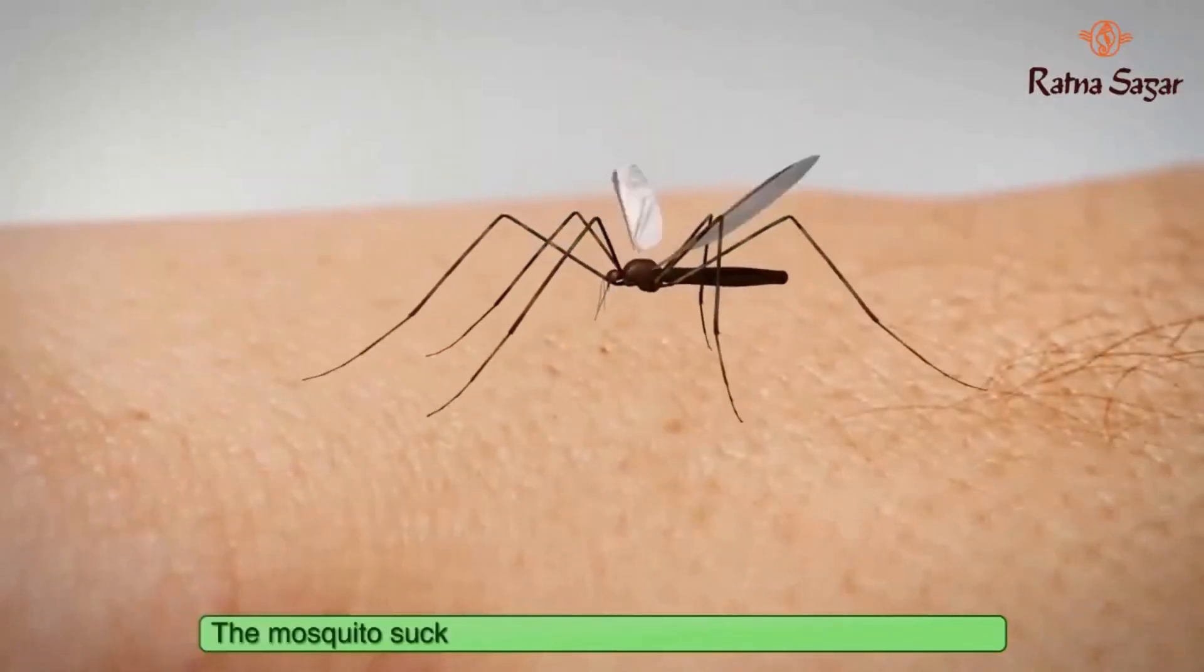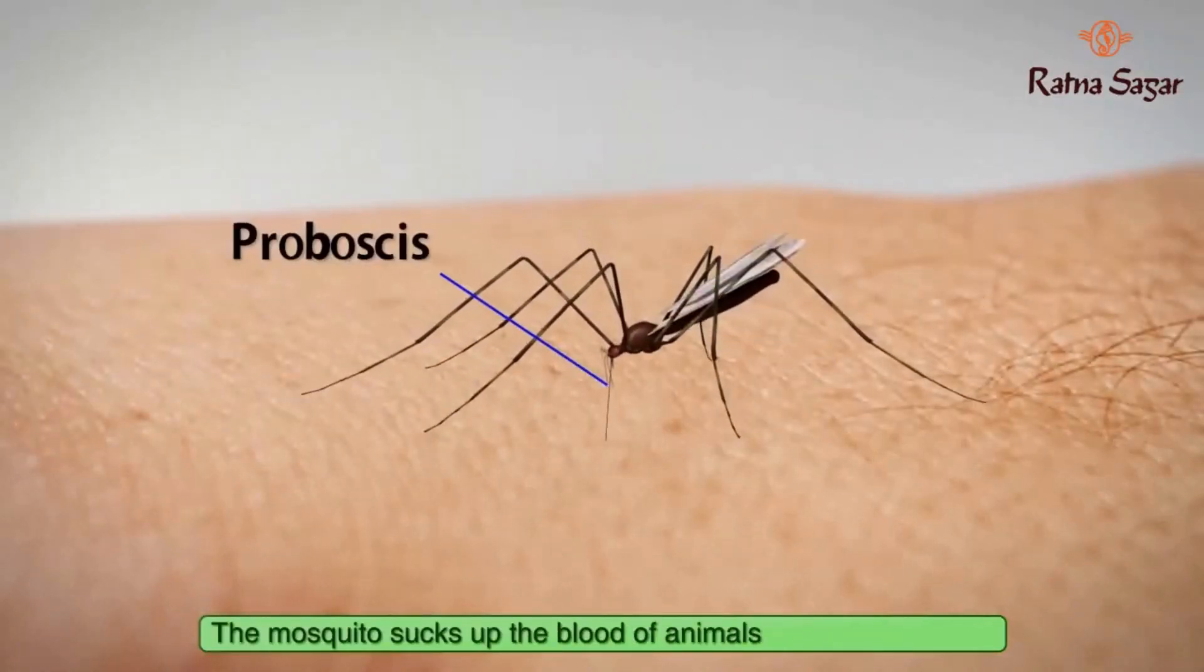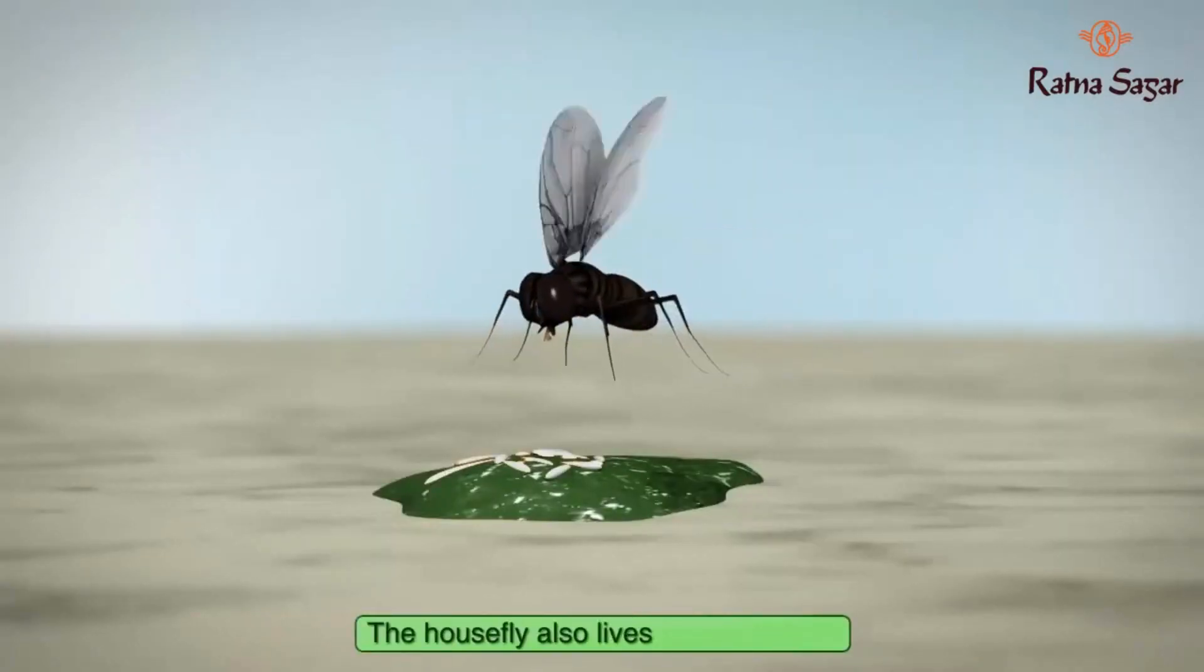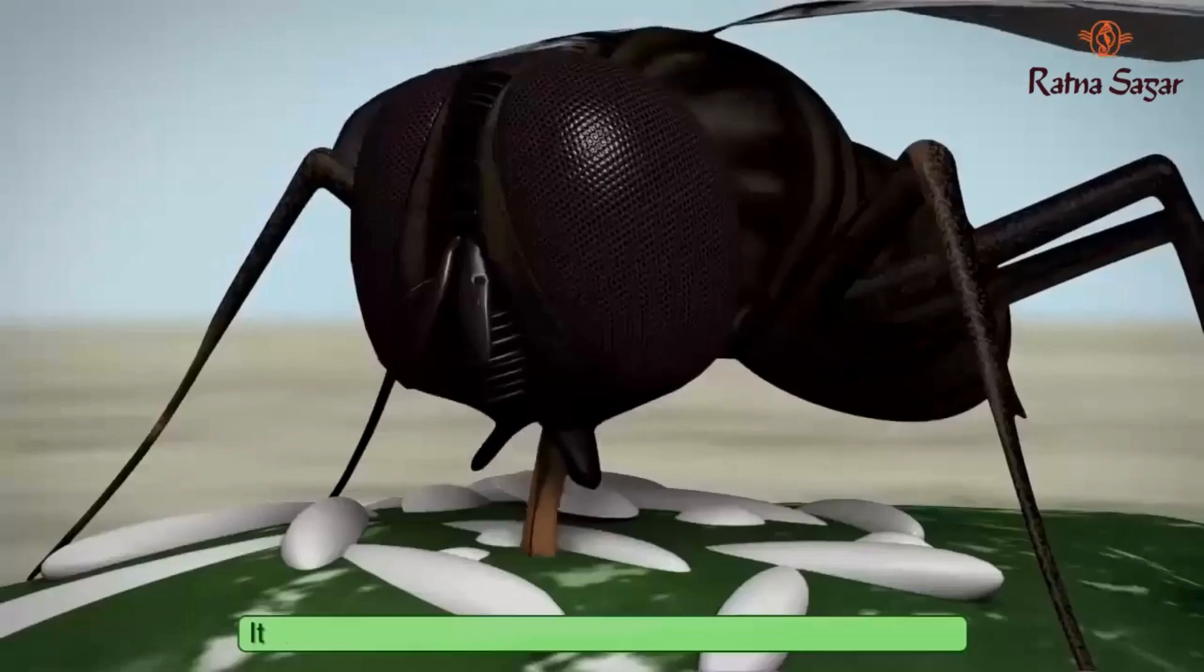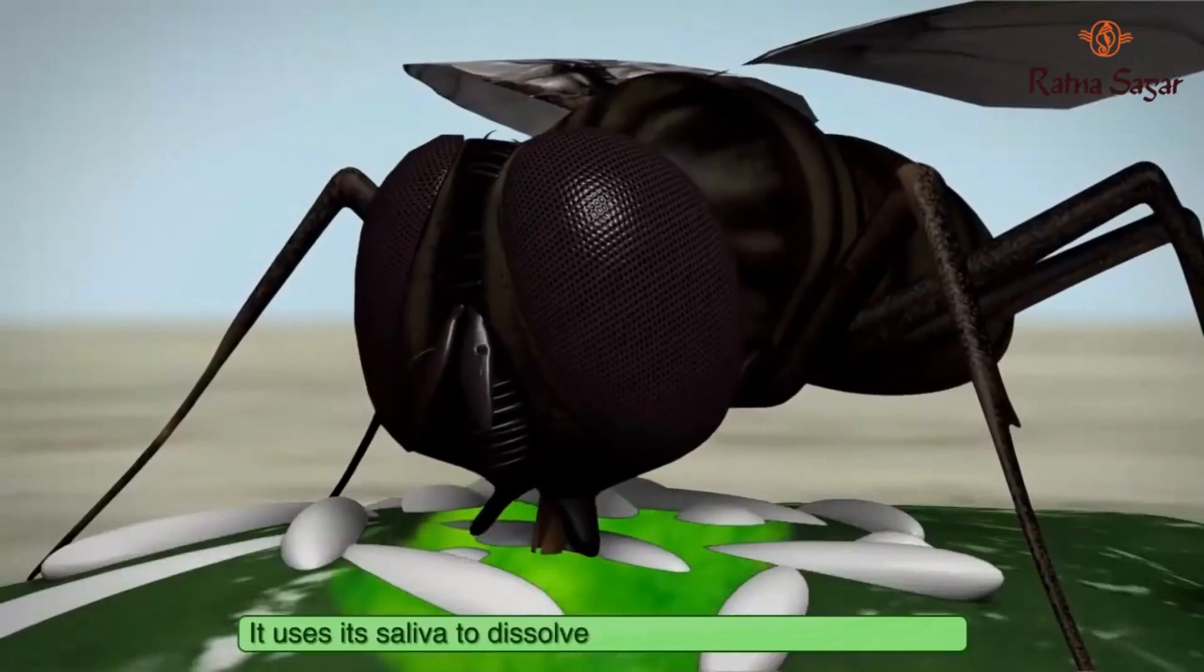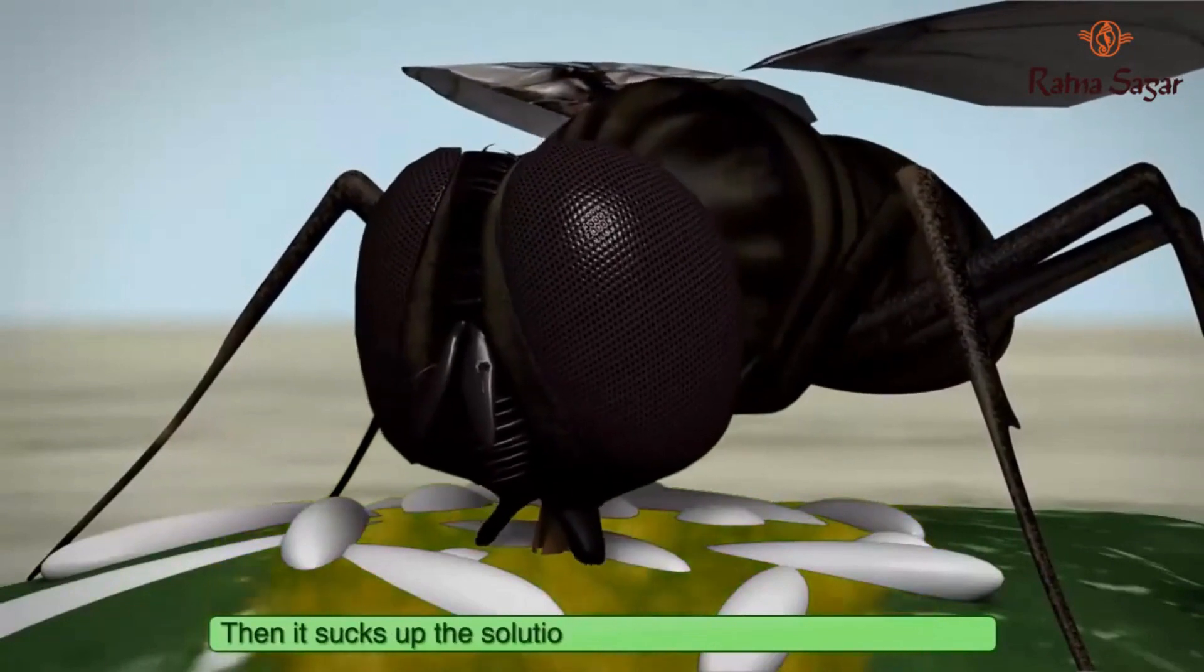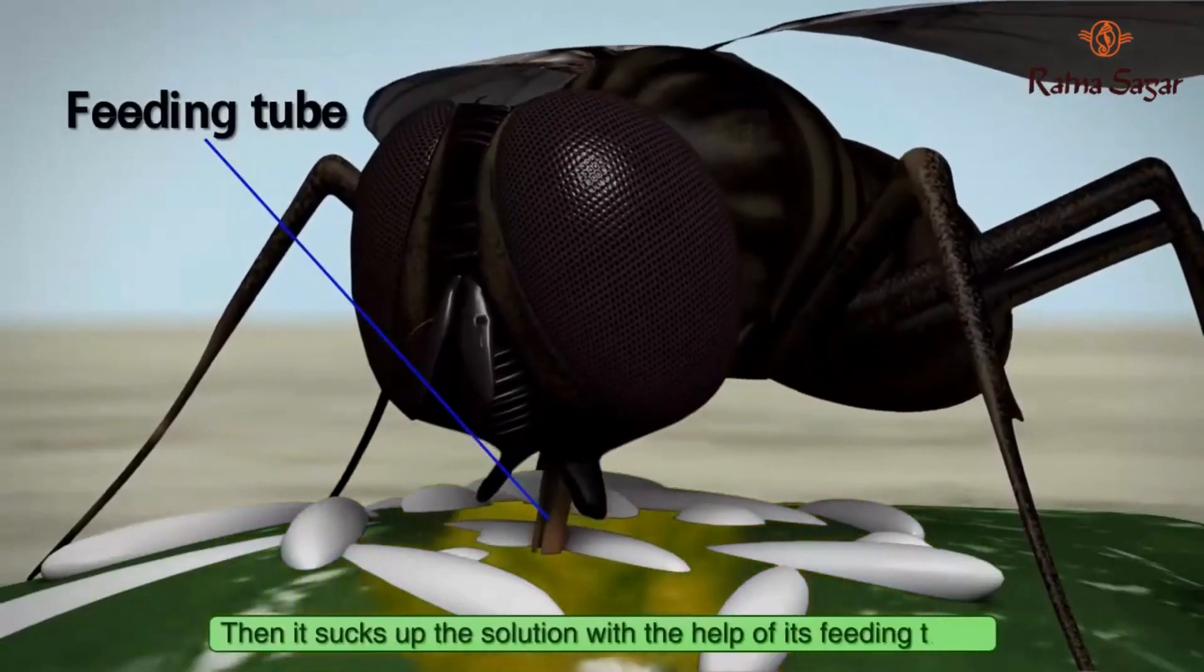The mosquito sucks up the blood of animals with its proboscis. The housefly also lives on liquid food. It uses its saliva to dissolve the food and form a solution. Then, it sucks up the solution with the help of its feeding tube.